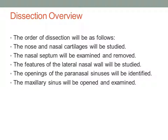Here's the section overview. We'll first turn towards the nose and the nasal cartilages, then have a look at the nasal septum and ultimately remove it. Then we will look at all the features of the lateral nasal wall, study these, and in the process remove the nasal conchae — also called turbinates — especially the inferior and middle ones, so we can study the openings of the paranasal sinuses. Then we'll open up the maxillary sinus, which is the biggest paranasal sinus, and examine it.